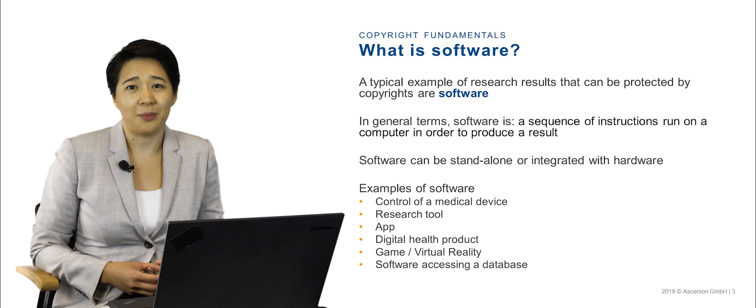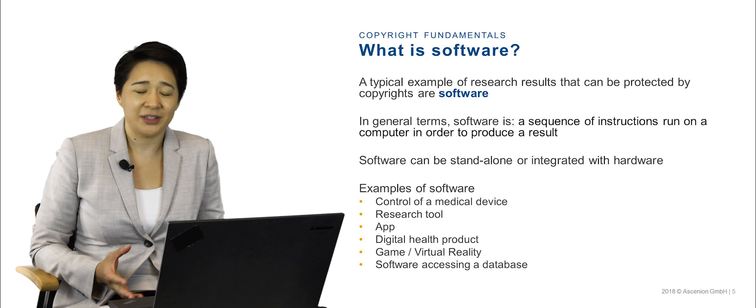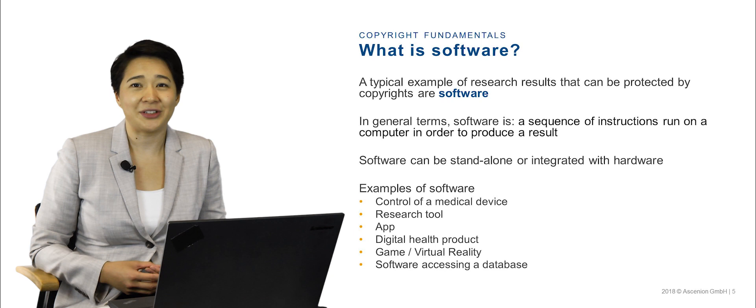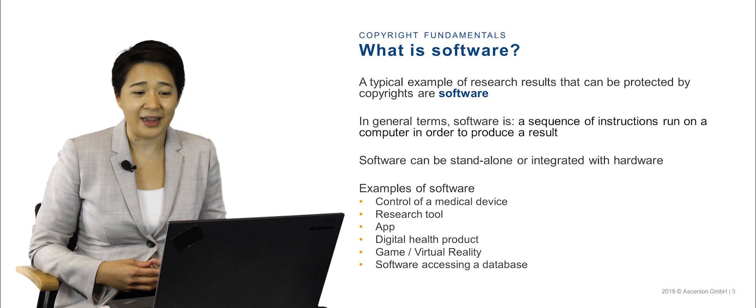So what is software? A typical example of research results that can be protected by copyrights is software. In general terms, software is a sequence of instructions run on a computer in order to produce a result. Software can either be a standalone program or integrated with hardware. You have likely encountered software programs and products. Here are just a few examples of software technologies that are used or developed in the life sciences.